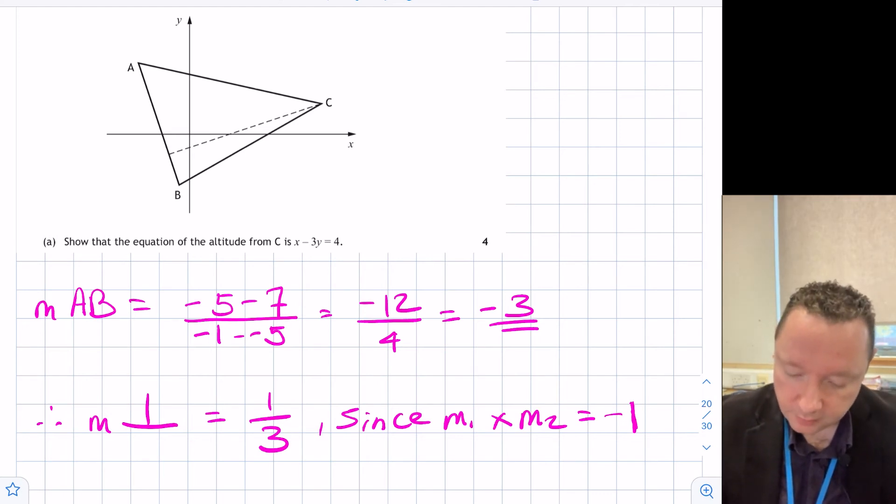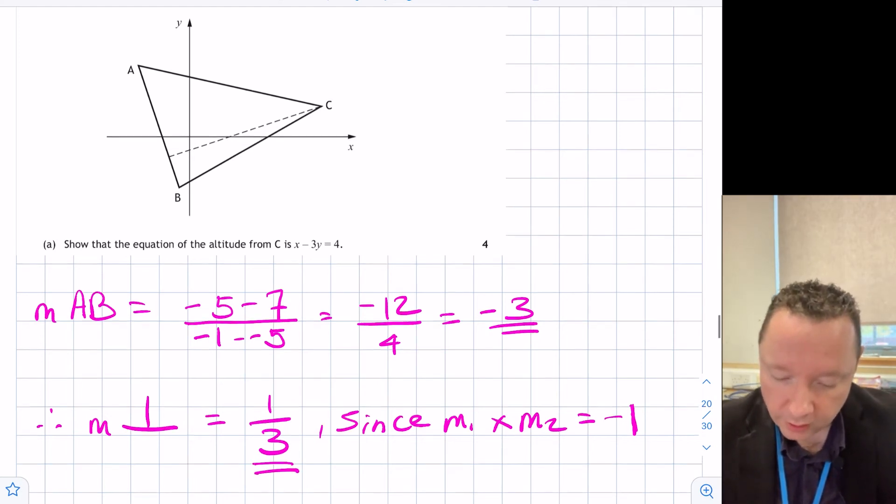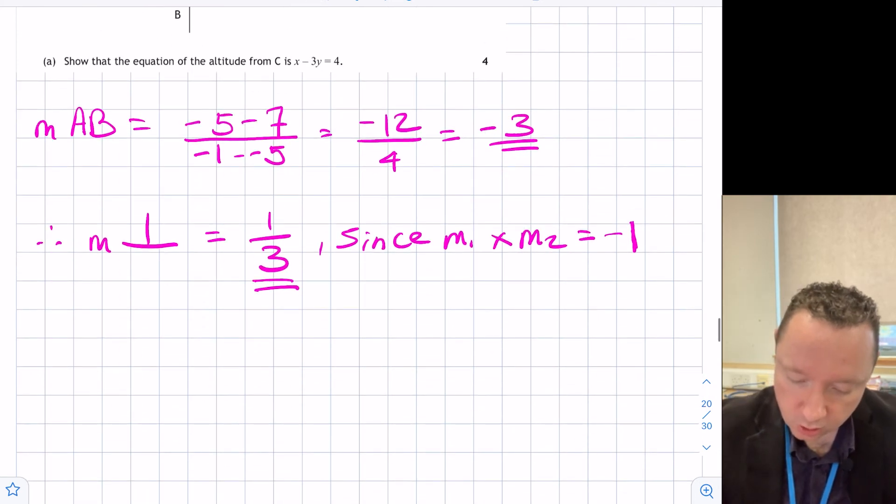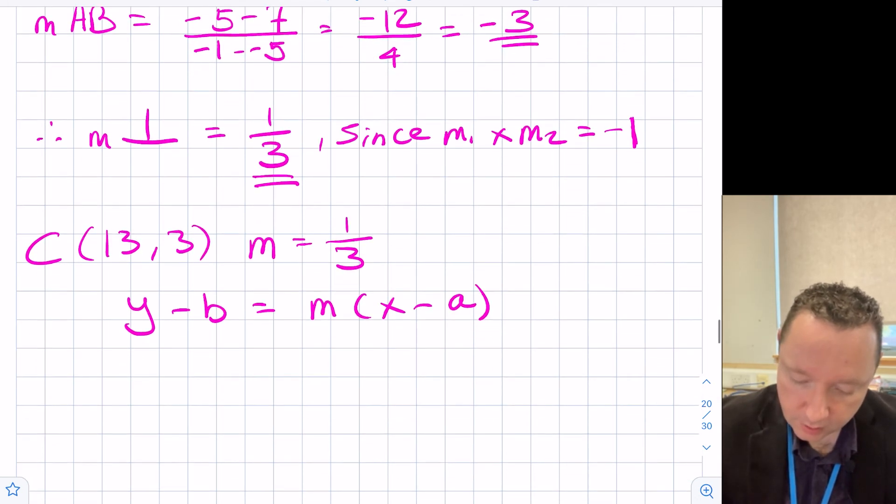So we've got our gradient, and we've got our point. If we just double-check our question, our point, remember, is the one from the vertex C, so that's (13, 3) is what we're using. So using the point C, which is (13, 3), and our gradient M, which is one-third, then we'll do Y minus B is MX minus A. Y minus 3 is one-third of (X minus 13).